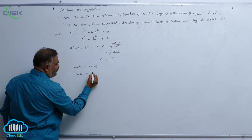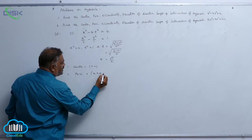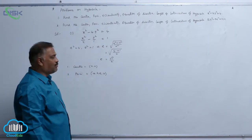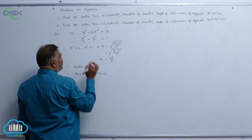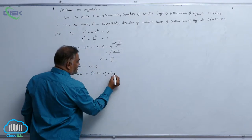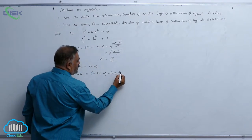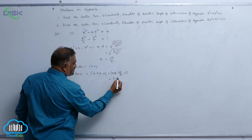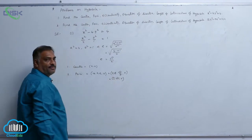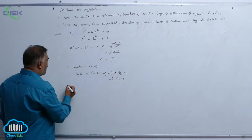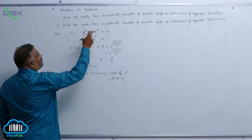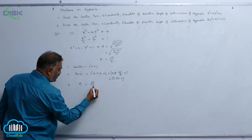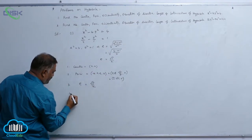Foci = (±ae, 0) because it is the standard equation of hyperbola. The a value is 2, so foci = (±2 · √5/2, 0). The 2 gets cancelled, giving (±√5, 0). The eccentricity is √5/2.